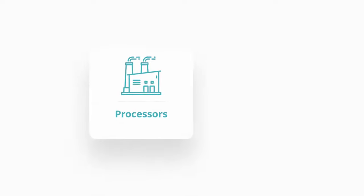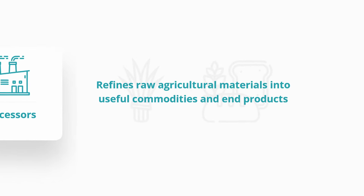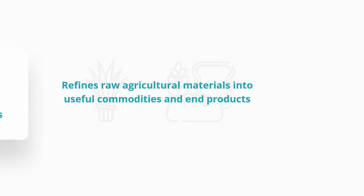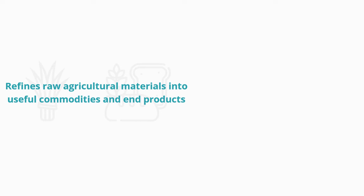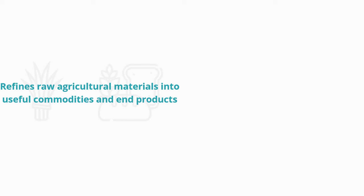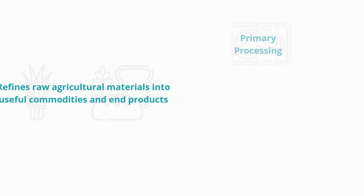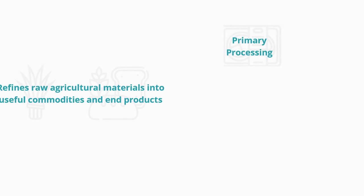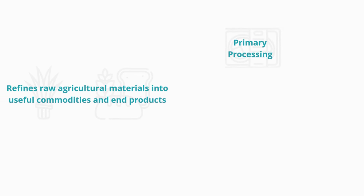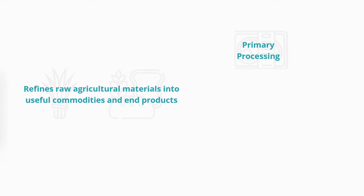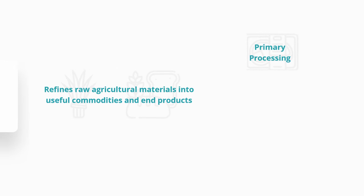Processors refine raw agricultural materials into useful commodities and end products. We can divide processing into two steps. Primary processing involves minor transformations to the raw material, such as pasteurizing milk or packing meat into marketable commodities.